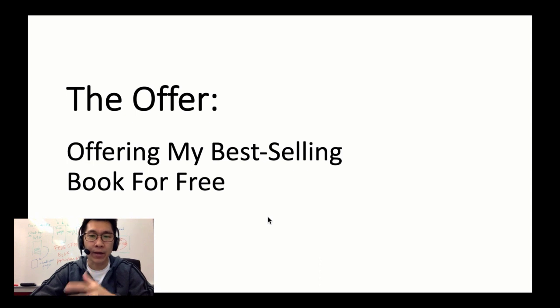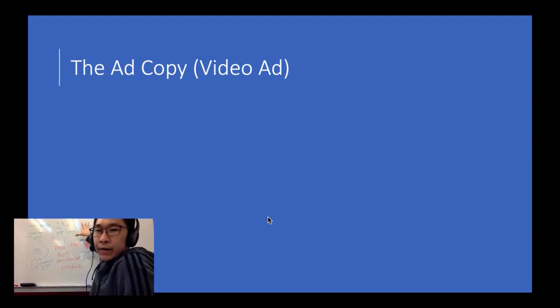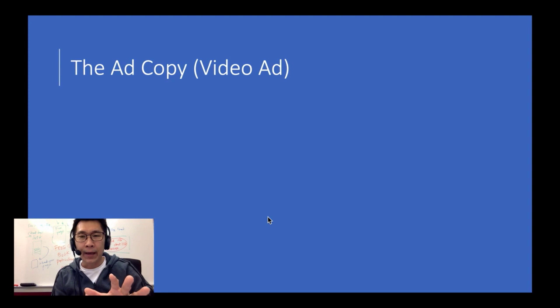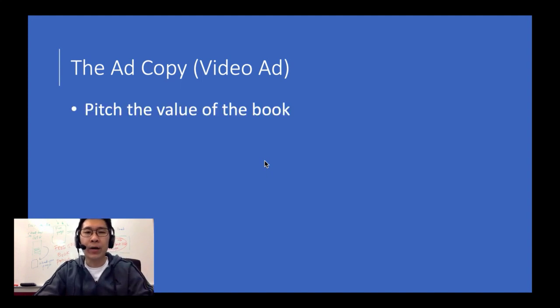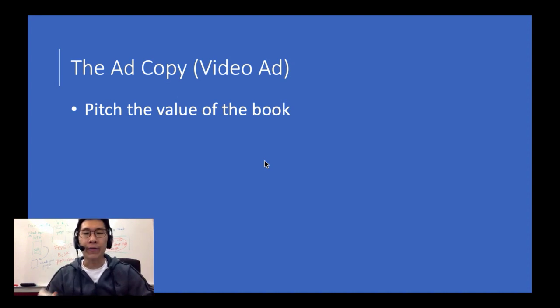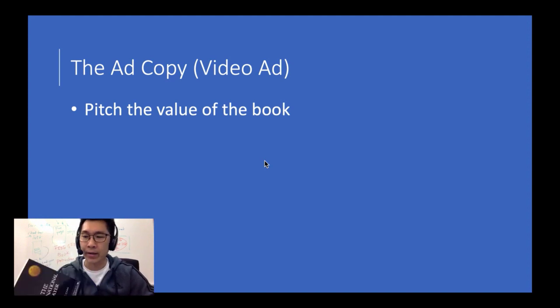How do we make this campaign a bit different? It's going to be a video ad with some written description based on the video's content. There are three key things I will express in the ad. The first is pitching the value of the book — whatever offer you have, you should be able to summarize it in a sentence or two. The International Player is my best-selling book that was previously sold in a local bookstore.